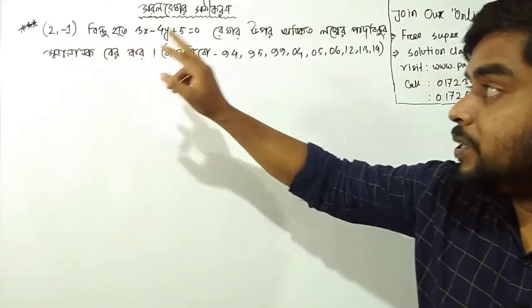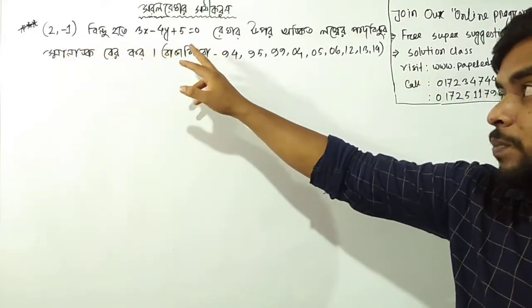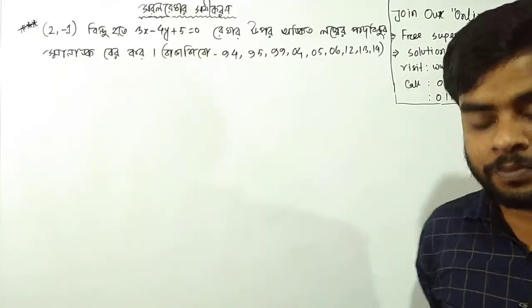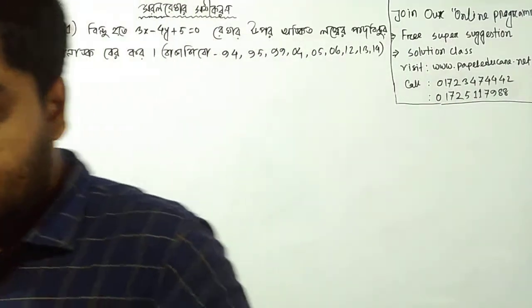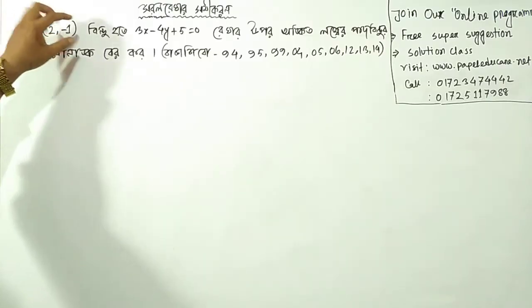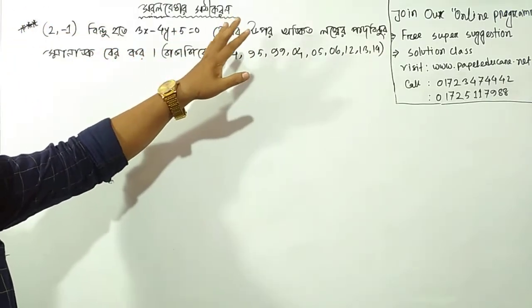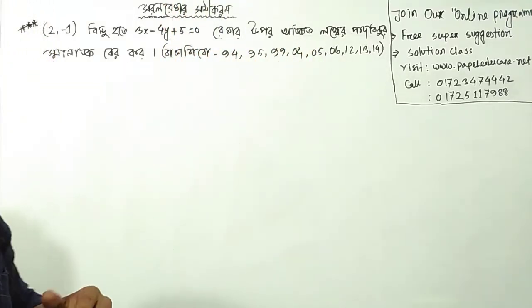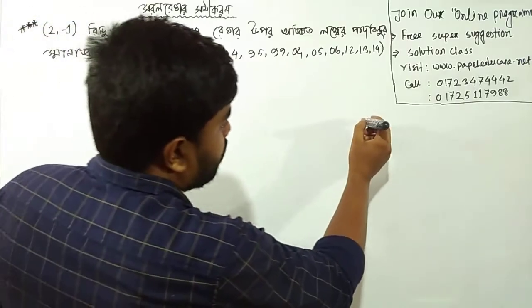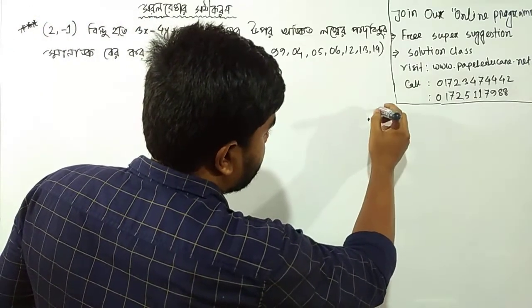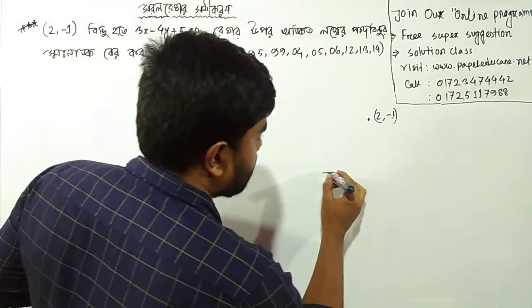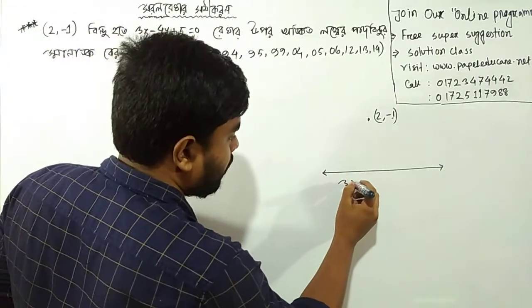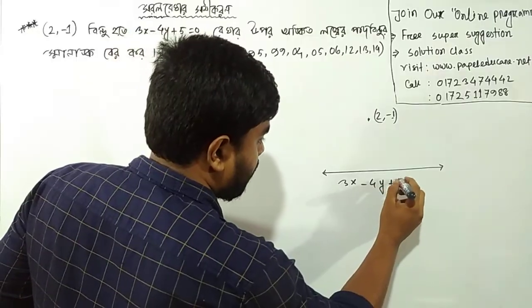2 minus 1 is equal to 3x minus 4 plus 5 is equal to 0. This is equal to 0. So, if we are equal to 0, we are equal to 0. This is equal to 0.